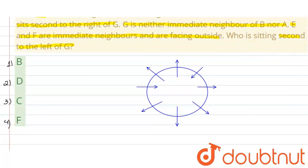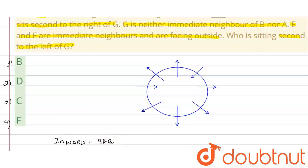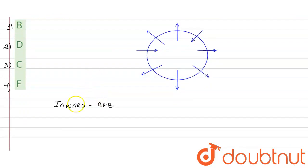8 people A, B, C, D, E, F, G, H. Jo inward direction mein baithe hain, wo hain A aur B. So, A and B face inward. Jinका face bahar ki taraf hai, wo hain baaki bache hue chhe log: C, D, E, F, G, and H. In logon ka munh jo hai, wo bahar ki taraf hai.